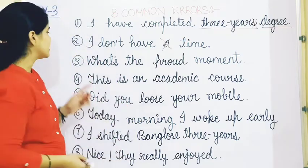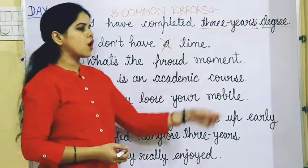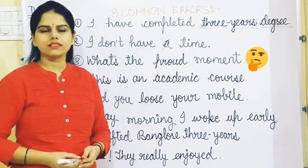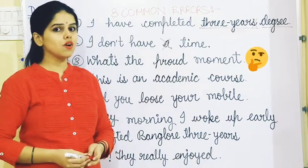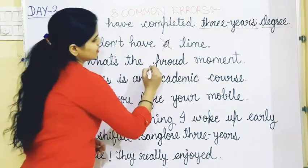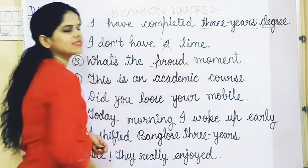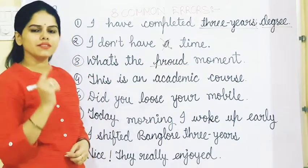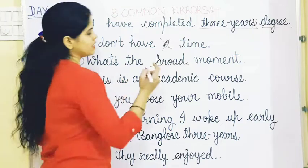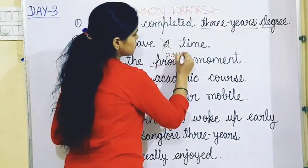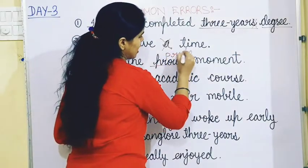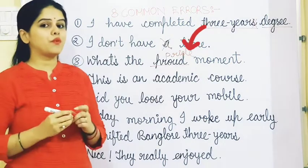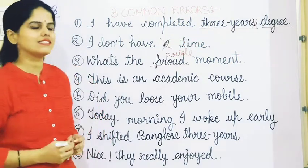The third sentence is: What's the proud moment? What's wrong? The mistake is that 'proud' is an adjective, and instead of the adjective we should use the noun 'pride'. The correct sentence is: What's the pride moment?